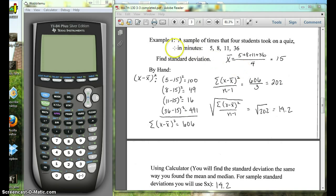We're going to look at this example in the notes. It says a sample of times that four students took on a quiz in minutes. Here you can see it's all worked out by hand. It's kind of a long process even for just four numbers, so it's definitely something we want to do on the calculator.